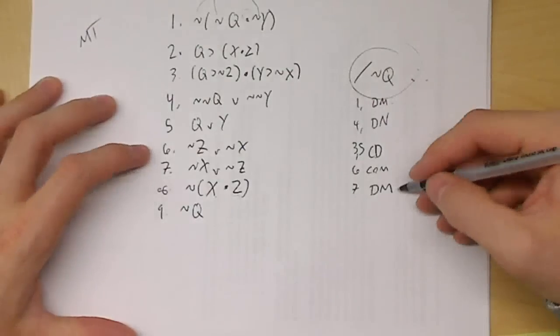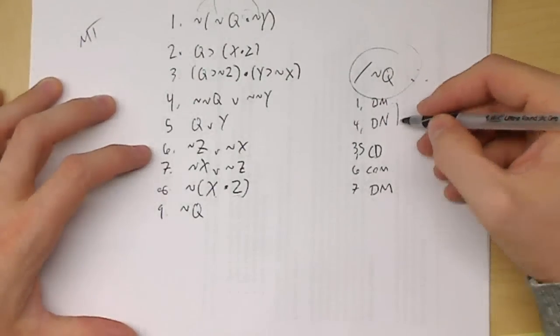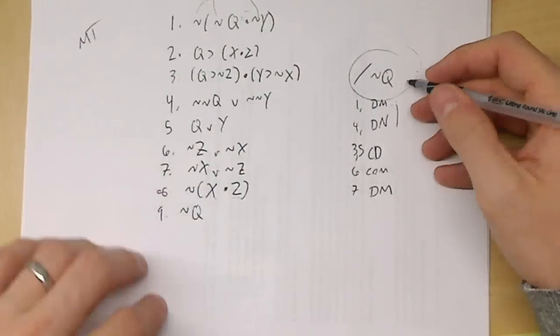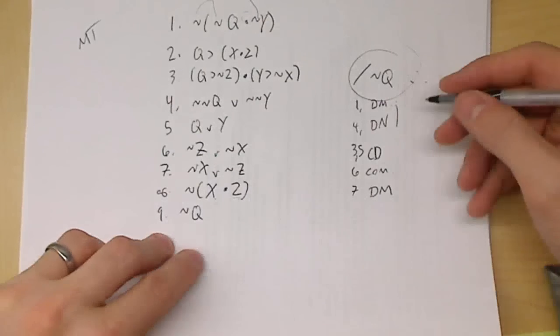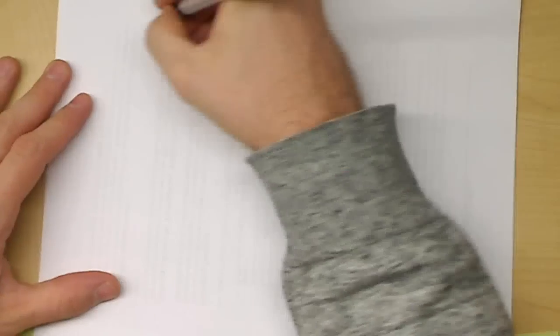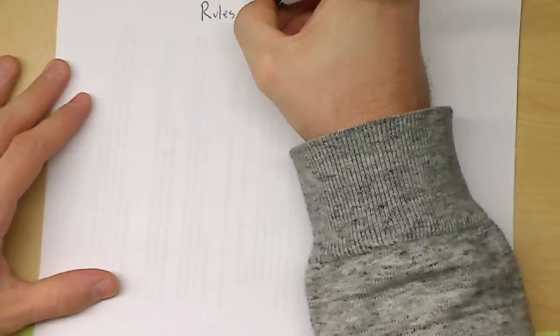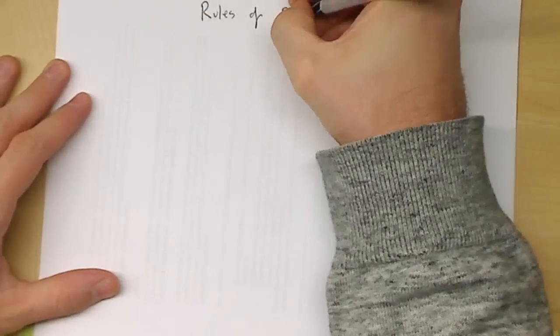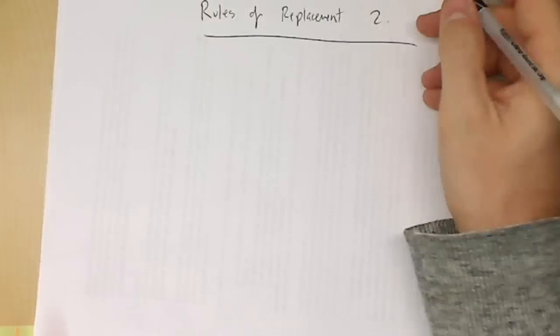This one really only used the DeMorgans and the double negation rules. So that's an example problem. Now I'm going to pause the video and then we'll do example problems from the rules of replacement two.